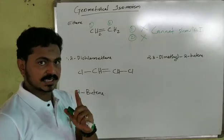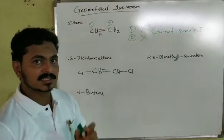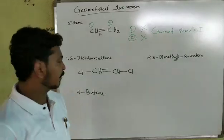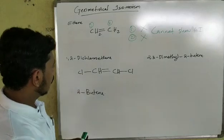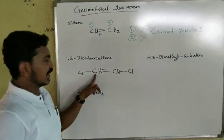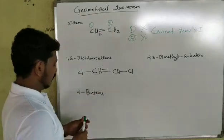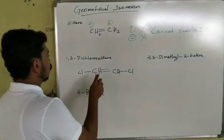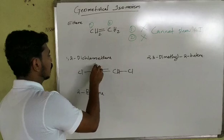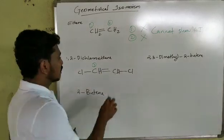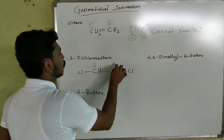The other condition is that the two substituents on each double-bonded carbon should be different. If you have double-bonded carbons — carbon number one and carbon number two — the groups attached to each must be different from each other.